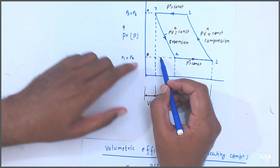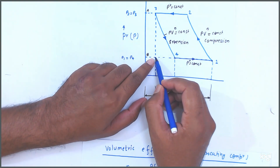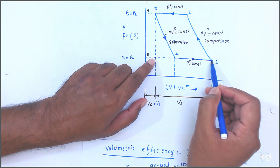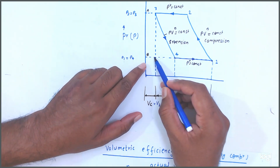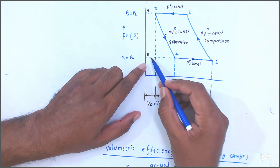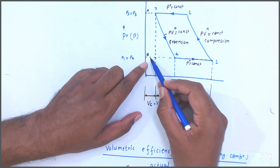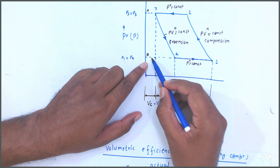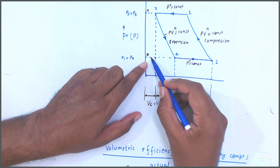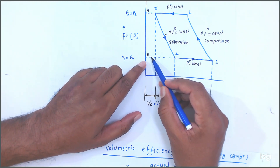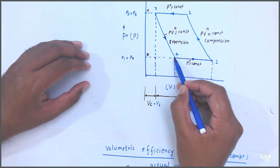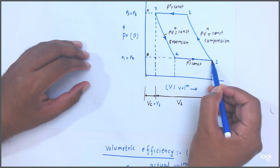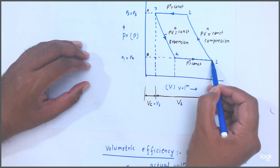In ideal condition, whatever volume should come in, it should be equal to the swept volume. But what happens friends, due to clearance volume, some gases — some air — get compressed inside. And when suction happens, the gases in the clearance volume expand, which reduces the actual suction volume. So this is the actual volume.